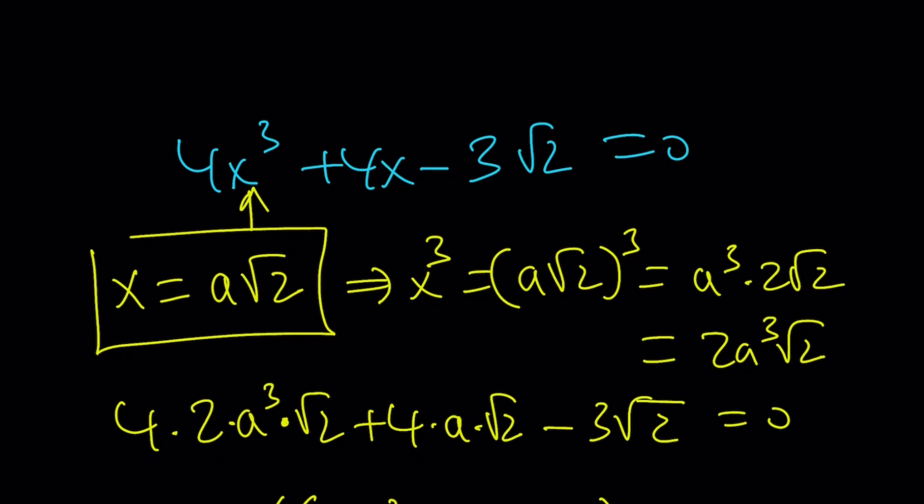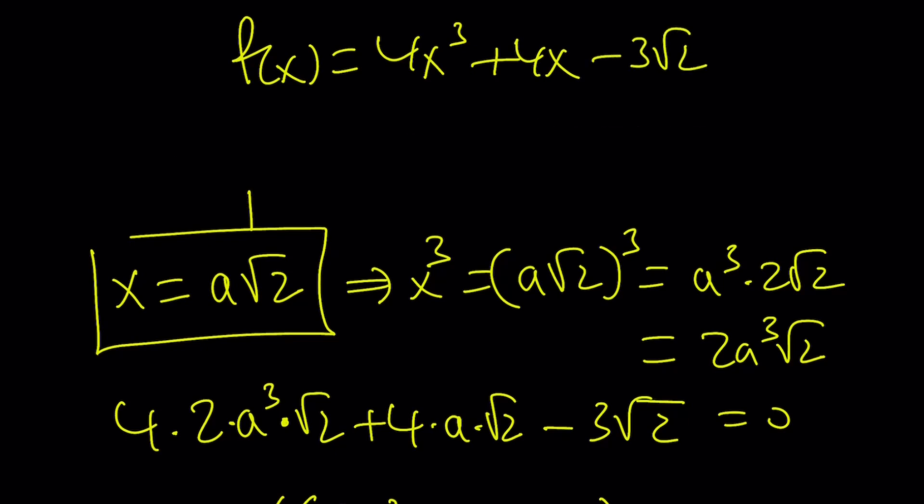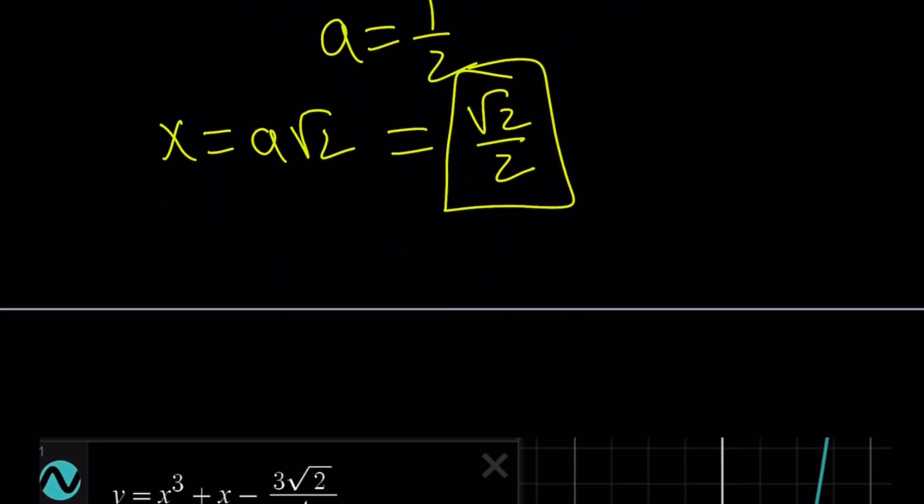If I call f(x) = 4x³ + 4x - 3√2, and differentiate this function. Then I'm going to get the following. f'(x) is going to be 12x² + 4. And this is always positive. Which means our function is increasing. And it's only going to intersect the horizontal line at a single point, or the x-axis. Let's go ahead and take a look at the graph. And we're going to finish up.